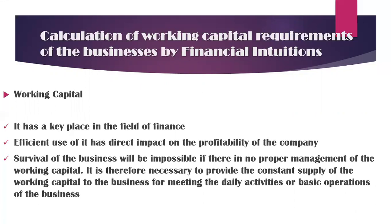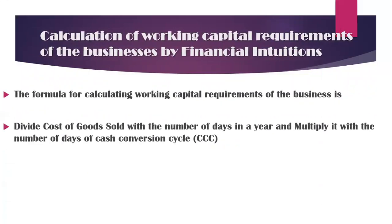Now let's see how the banking industry practically calculates the working capital needs of their customer. The formula is simple: take the cost of goods sold from the financial estimate, divide this figure by the number of days in a year — most of the time 360 days — and then multiply it by the number of days of the cash conversion cycle. The formula for cash conversion cycle is: DSO plus DIO minus DPO, where DSO stands for Days Sales Outstanding, DIO stands for Days Inventory Outstanding, and DPO stands for Days Payable Outstanding.